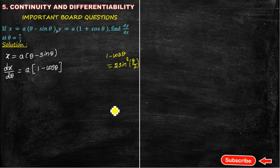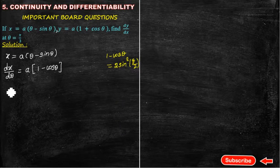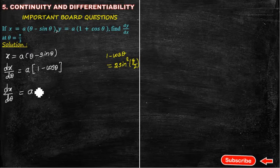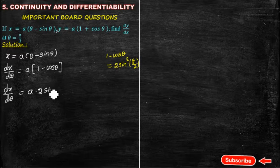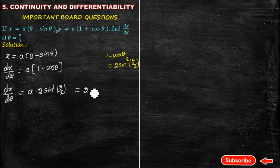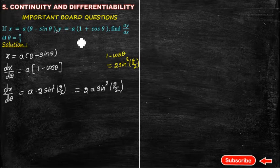Using the formula 1 - cosθ = 2sin²(θ/2), we substitute. So dx/dθ = a × 2sin²(θ/2), which gives us dx/dθ = 2a·sin²(θ/2).